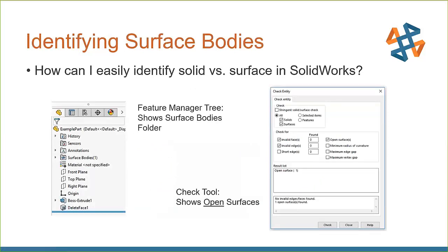How we identify surface bodies in SOLIDWORKS: the easiest and primary way is by looking at your Feature Manager tree on the left-hand side. As soon as you have surface bodies, a surface body folder will turn on, and you'll see surface bodies with a number in parentheses representing how many you have. Another good way is by using the Check Entity tool found in your Evaluate tab. This is primarily for finding open surfaces — surfaces where an edge has only one face as a boundary. If you have a fully enclosed surface body, it will not show up in the Check Entity tool.